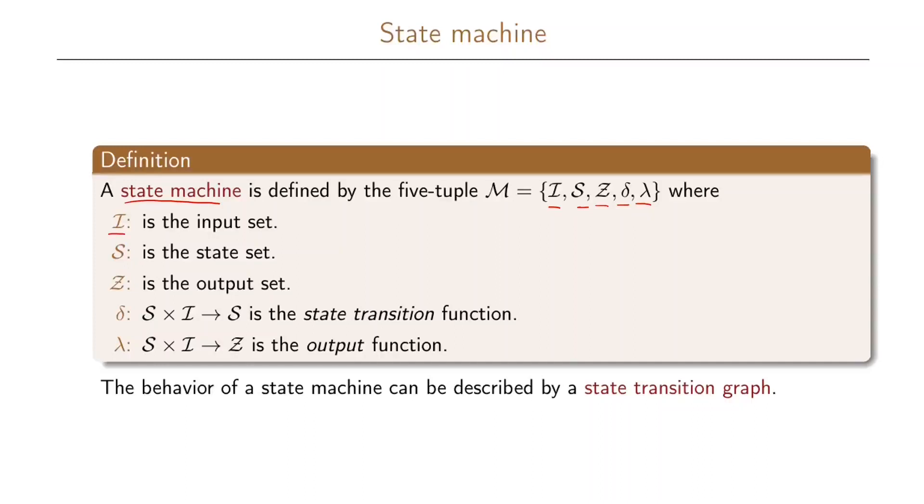I is the input set, the set of possible inputs that we have in our system. S is the set of states that we have in our system, while Z is the output set, the set of all outputs in our system.